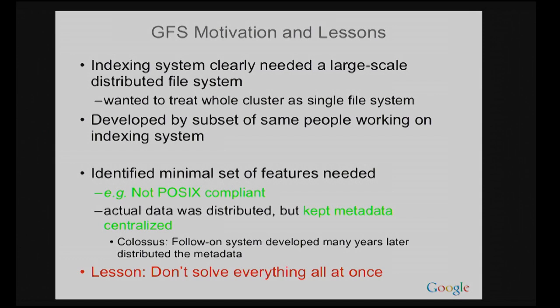For example, our file system is not POSIX compliant — we didn't need some of the features in there, and that allowed us to simplify some aspects of the design. We decided to distribute the data but keep the metadata service centralized, and that again simplified a bunch of aspects of the design. Eventually, we ended up distributing the metadata, but we didn't need to do that initially — we could do that later on when the need arose. One important lesson is: if you're building infrastructure, don't try to solve all the problems at once. Pick the really important problems that are vital to solve and defer solving others that might complicate the system you're trying to build.